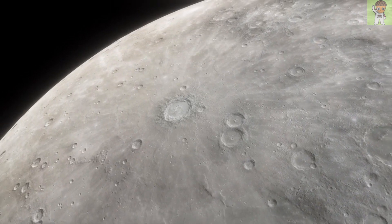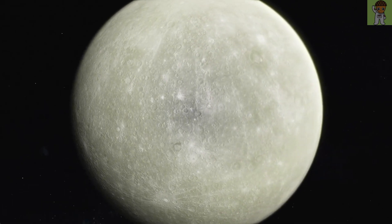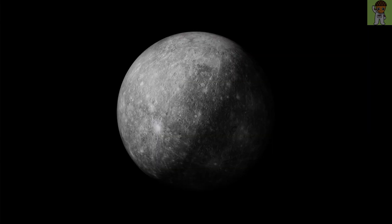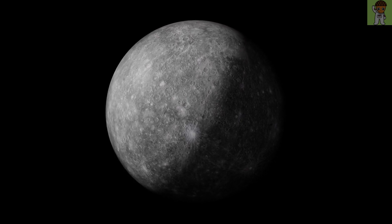Scientists originally thought these scarps were billions of years old, but the new research showed that some were just 300 million years old, which suggests the planet has been shrinking for most of its life. And it could still be happening today.